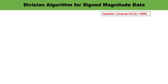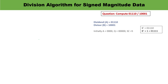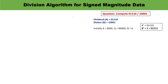Now let us take this question. We need to compute this division operation — there is a number in the numerator and one in the denominator. The dividend A equals 01110, and the divisor B equals 10001.